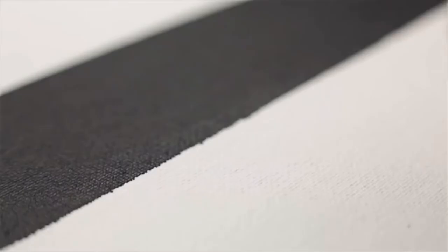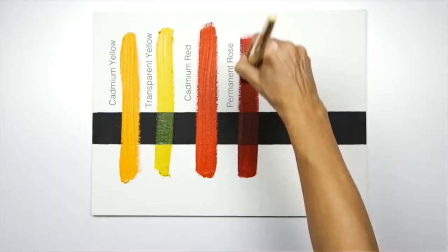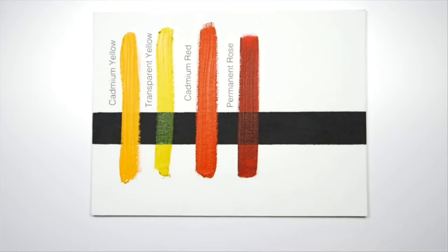Whereas, the permanent rose, you can see, allows the dark and the light to show through, and again, would be a really good color to use when glazing.